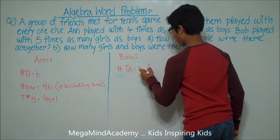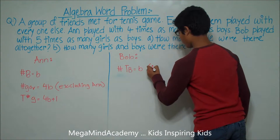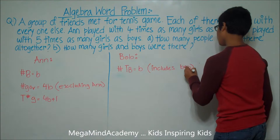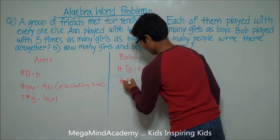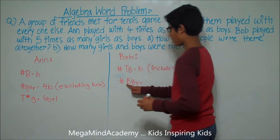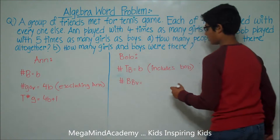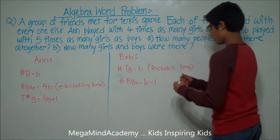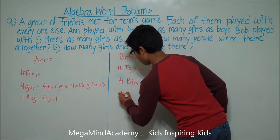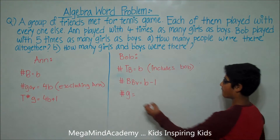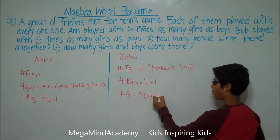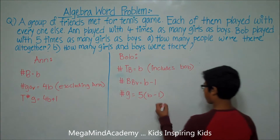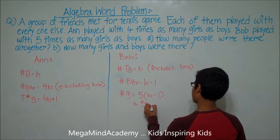But this B is the total number of boys, so it includes Bob. This means that the number of boys Bob played with is equal to B minus one, because Bob is one boy. So the number of girls is equal to five times B minus one, which is equal to five times B minus five.